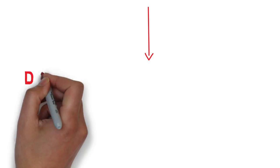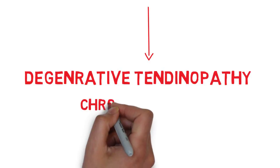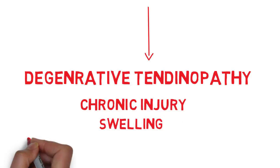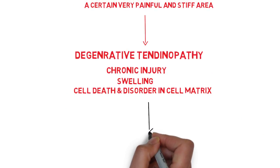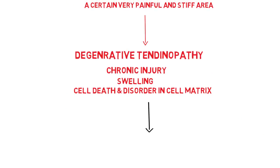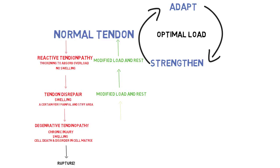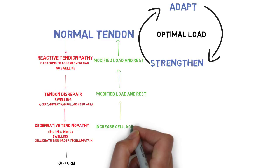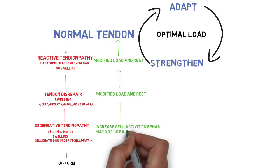The final stage is degenerative tendinopathy. This is a chronic injury and there's going to be a lot of swelling, and a lot of things happening at cell level in this tendon — there's going to be cell death and disorder in the cell matrix. This is basically the very final stage before the tendon fully ruptures. The emphasis of rehab work at this point will be on eccentric work and more manual therapy such as friction massage, which is used to increase cell activity in the area.